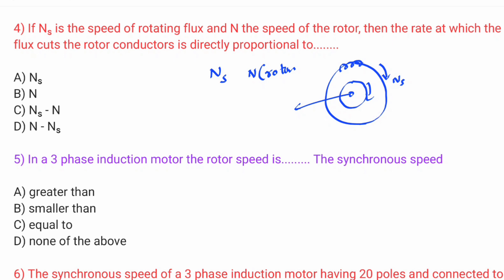The physical rotor speed is generally called Nr, and the stator field speed is Ns. For example, the stator field rotates at 1500 RPM and the rotor runs at some speed below that. The relative speed is Ns minus Nr. If the rotor speed equals synchronous speed, the relative speed is zero.